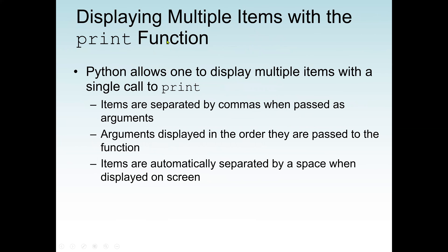Python allows displaying multiple items with a single call to print. Items are separated by commas when passed as arguments, and they display in the order they are passed to the function. If I want to print A first, then A should come before B and C.